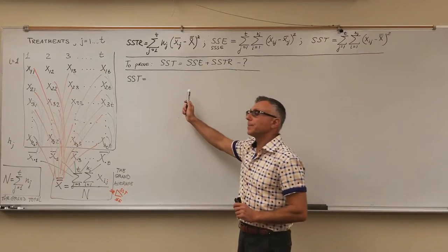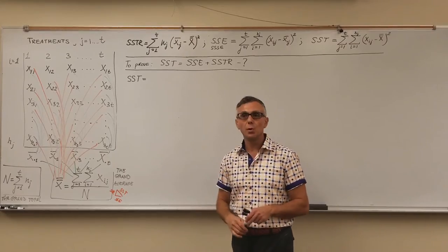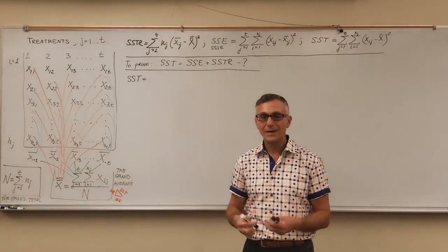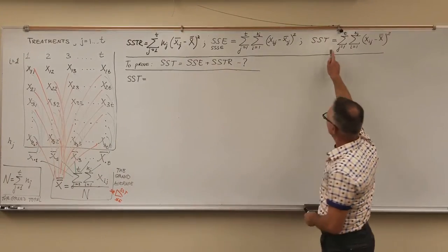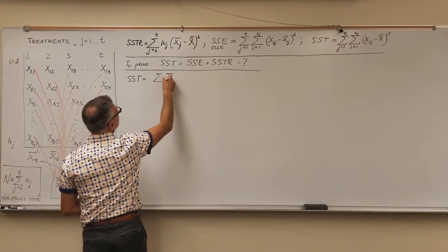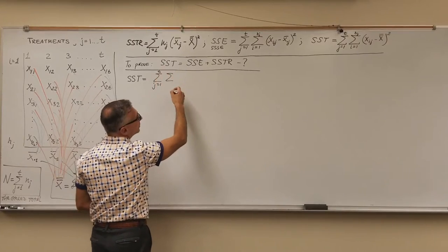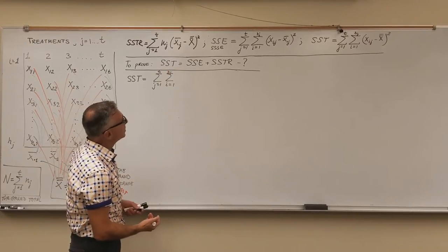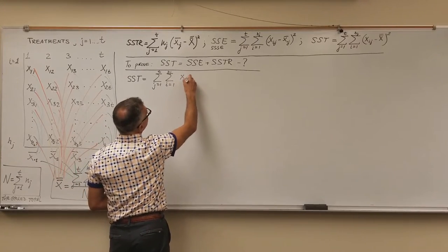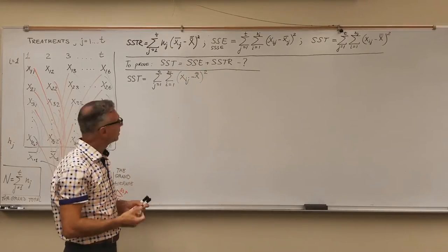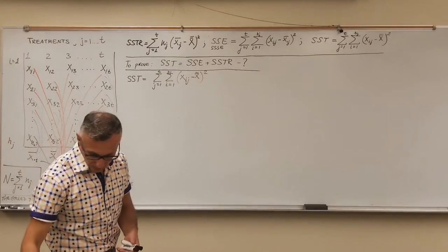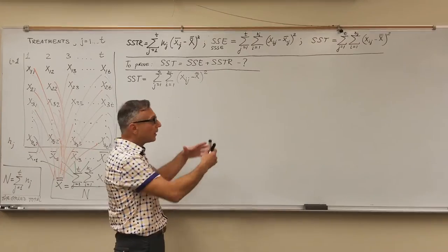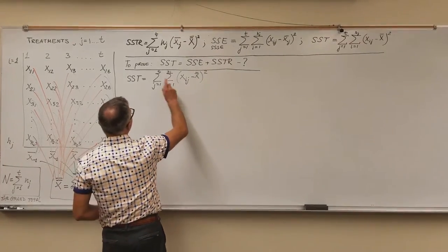I will prove it now. There are not many proofs of this — I haven't really seen many. There are a couple from Google that prove it very briefly without going into detail. I will try to show it in more detail. We start with SST, defined as a double sum: J runs from 1 to T as the outer loop for the treatments, and I runs from 1 to N_J for the measurements within each treatment. It's the sum of squares of differences between individual observations and the grand average, which has no indices since it's one value for the whole data array.